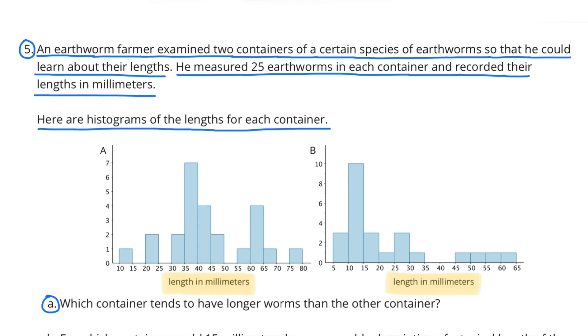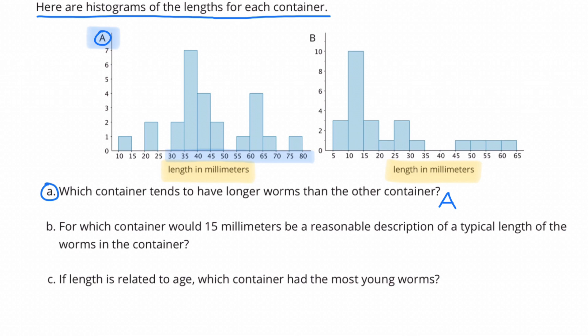A. Which container tends to have longer worms than the other container? The length of the earthworms in container A range from 10 millimeters to 80 millimeters, so container A tends to have longer worms than container B.